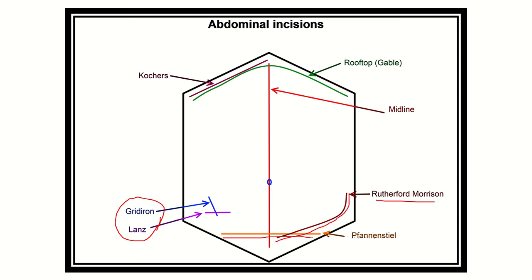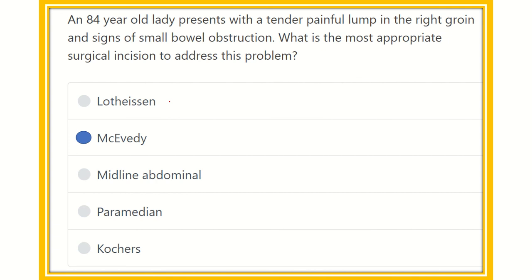Here we can see the McEvedy incision is suitable for this 84-year-old lady because the painful lump is present in the right groin with signs of small bowel obstruction. So our final answer is McEvedy.